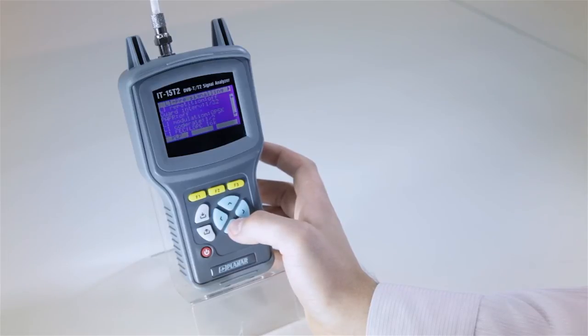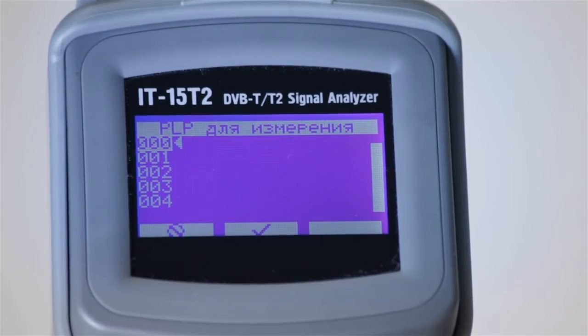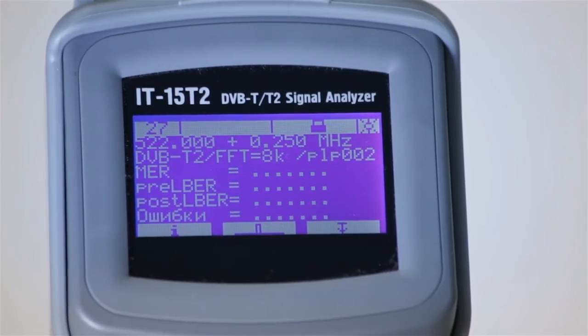Press F1 to view the table. If a channel contains several independent PLP streams, the instrument allows for measuring the reception quality parameters for each stream separately.